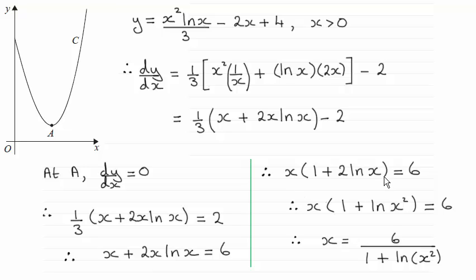And then you can see I've used the power rule for logs here, where the 2 comes up and gives us the natural log of x-squared. And so dividing both sides then by 1 plus the natural log of x-squared gives us the required result for x.